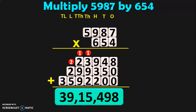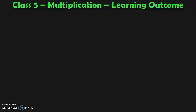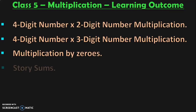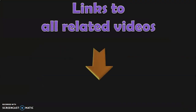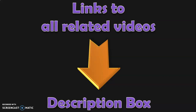Hope you have understood how to do a 4-digit number multiplication by a 3-digit number. These are all the learning outcomes in class 5 under the topic multiplication. I have covered the first topic — 4-digit by 2-digit number multiplication — in a separate video. In this video, we saw 4-digit by 3-digit number multiplication. In the upcoming videos, we will be seeing multiplication by zeros, story sums, mental math, and worksheets. Each of these topics will be dealt with in separate videos. Links to all related videos will be given below in the description box.